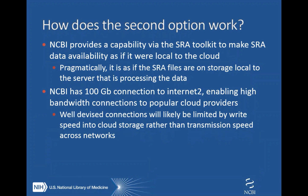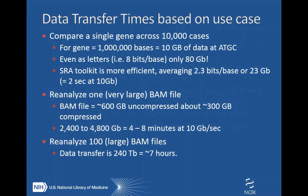NCBI provides capabilities via the SRA toolkit to make it look like data were local to the cloud. We also have a 100 gigabit connection to Internet 2 such that you could transfer rather fast. For example, a big use case for dbGaP data is to compare a single gene across 10,000 patients or cases. Even with a 10 gigabit connection, you would be looking at just a couple of seconds, assuming you use the SRA toolkit and didn't do something like dump to S3 and then realign your FASTQ files.